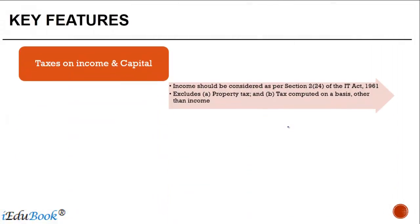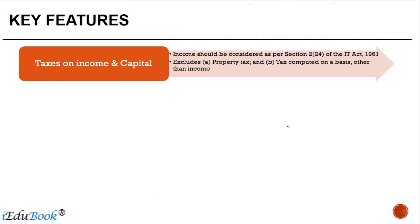Taxes on income and capital — here, income should be considered as per Section 2(24) of the Income Tax Act 1961 for Indian tax purposes. It should generally exclude property taxes or taxes which are computed on a basis other than income.